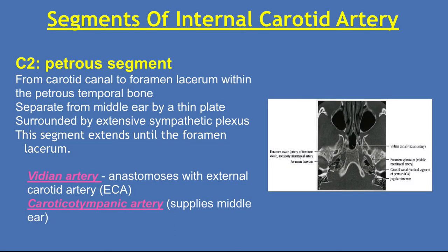Petrous segment: from the carotid canal to the foramen lacerum, within the petrous temporal bone, separated from the middle ear by a thin plate, and surrounded by an extensive sympathetic plexus. This segment extends until the foramen lacerum. Branches include the Vidian artery or artery of the pterygoid canal, which anastomoses with the external carotid artery, and the caroticotympanic artery, which supplies the middle ear.